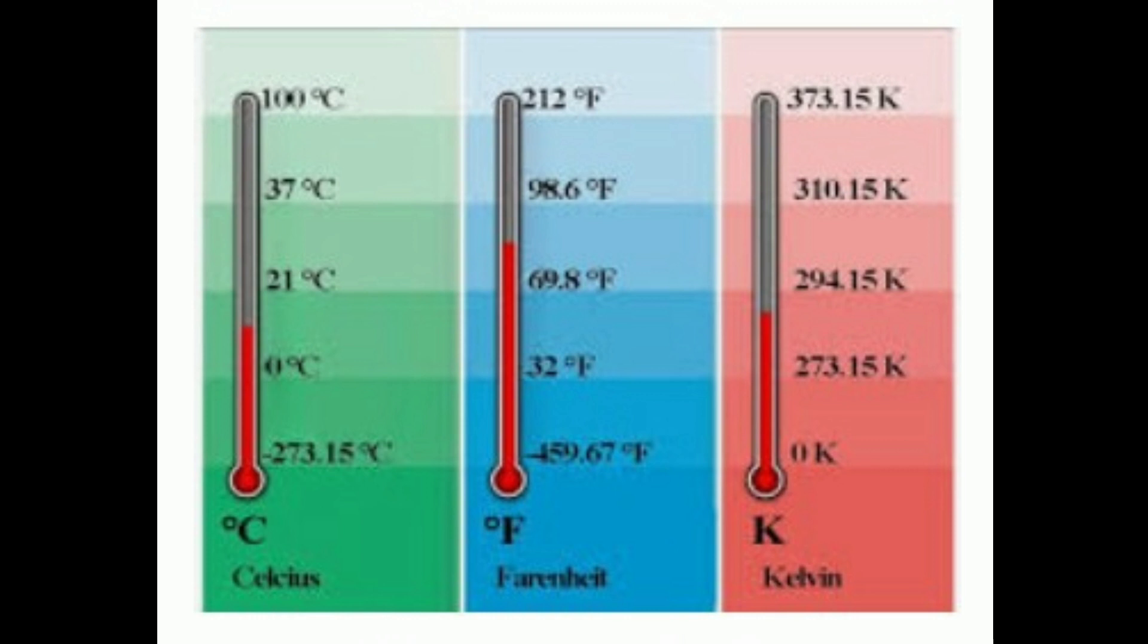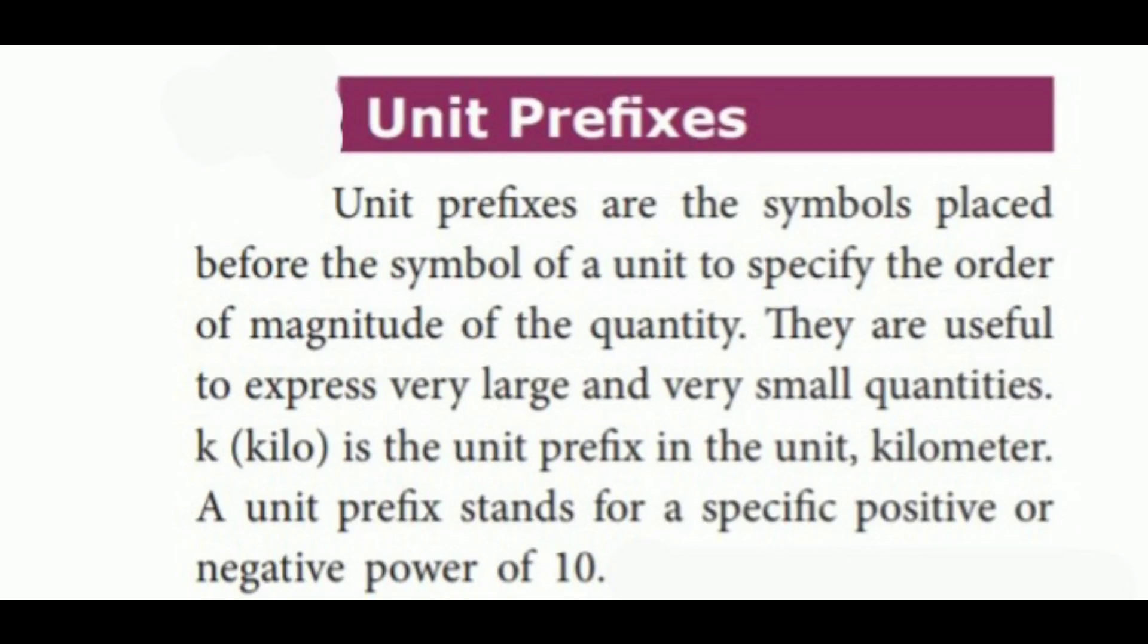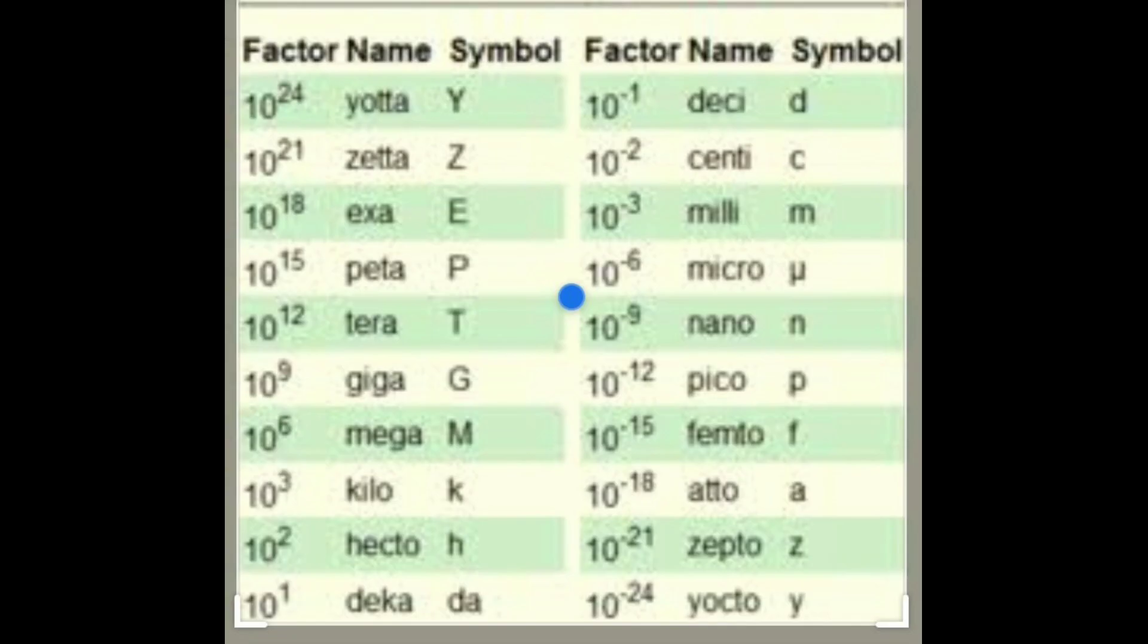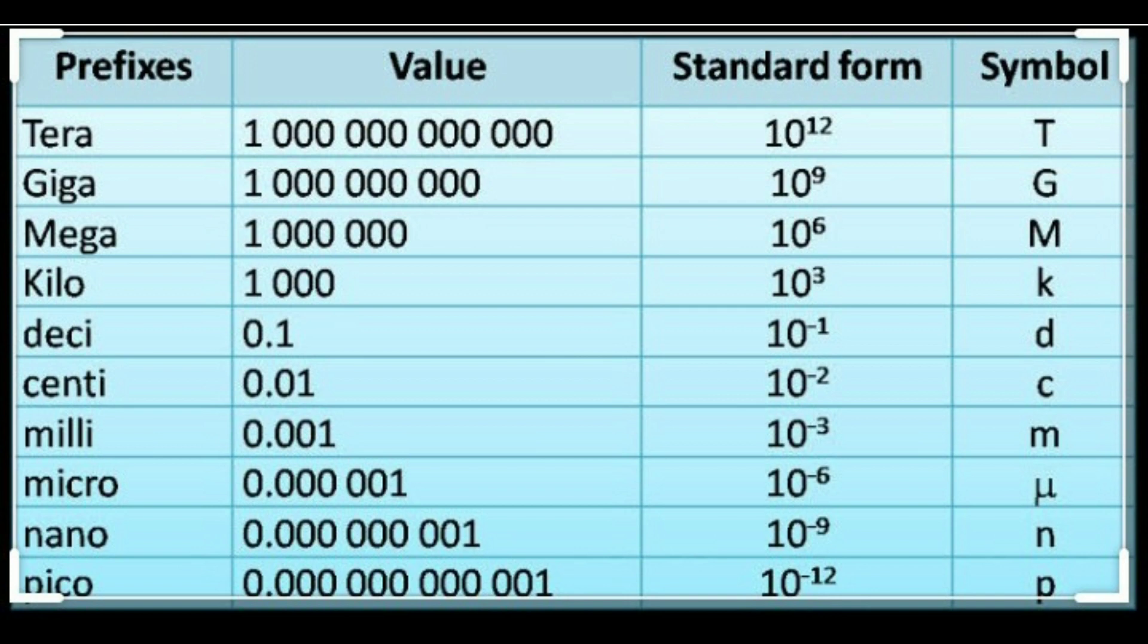Unit prefix. Unit prefixes are the symbols placed before the symbol of a unit to specify the order of magnitude of the quantity. They are useful to express very large and very small quantities. A unit prefix stands for a specific positive or negative power of 10.